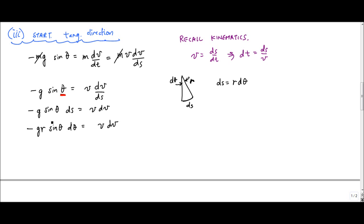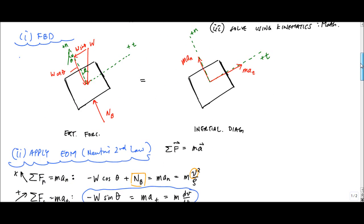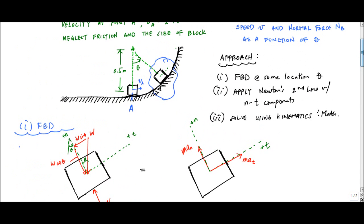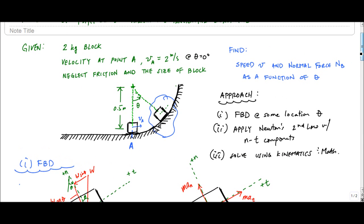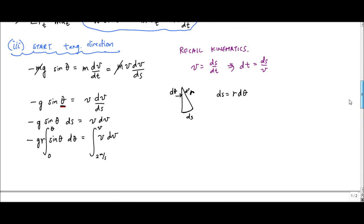So g and r are constants that can be pulled outside the integral. We integrate theta from zero to theta, and velocity from two meters per second — the initial velocity when theta was zero — up to some velocity as a function of theta. That gives us the velocity along the path as a function of the angle theta.